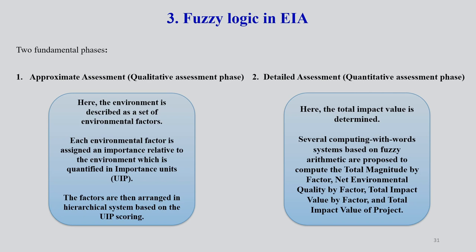There are two fundamental phases in fuzzy logic methods in EIA: approximate assessment, which is qualitative assessment, and detailed assessment, which is quantitative assessment. In approximate assessment, the environment is described as a set of environmental factors. Each environmental factor is assigned an importance relative to the environment, quantified in importance units called UIP. The factors are then arranged in hierarchical order based on UIP scoring.